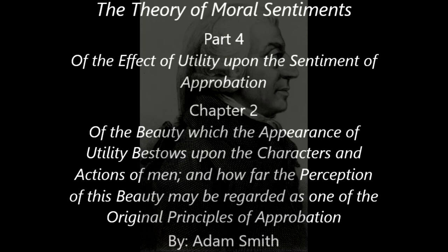The prudent, the equitable, the active, resolute, and sober character promises prosperity and satisfaction, both to the person himself and to everyone connected with him. The rash, the insolent, the slothful, effeminate, and voluptuous, on the contrary, forbodes ruin to the individual and misfortune to all who have anything to do with him. The first turn of mind has at least all the beauty which can belong to the most perfect machine that was ever invented for promoting the most agreeable purpose, and the second all the deformity of the most awkward and clumsy contrivance. What institution of government tends so much to promote the happiness of mankind as the general prevalence of wisdom and virtue? All government is but an imperfect remedy for the deficiency of these. Whatever beauty, therefore, can belong to civil government upon account of its utility must in a far superior degree belong to these.